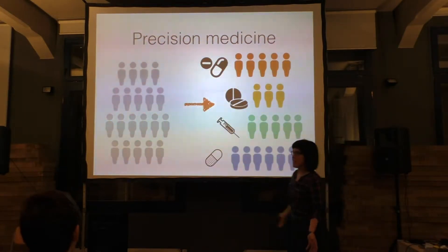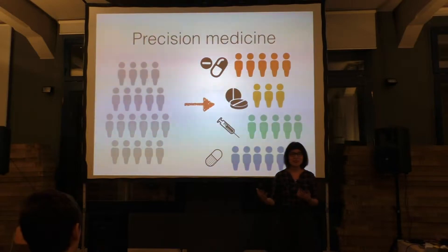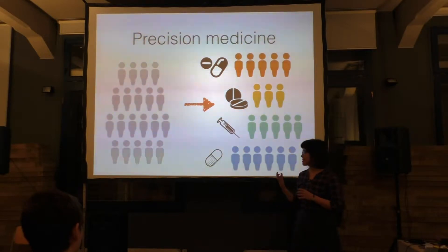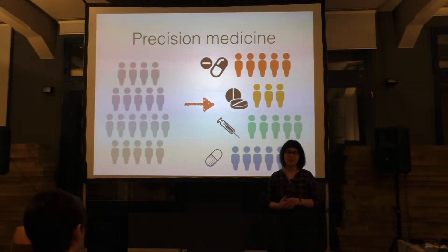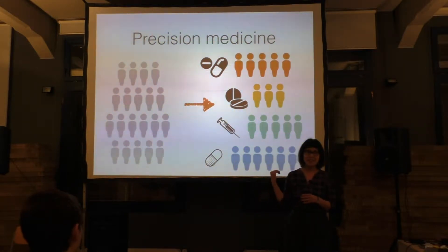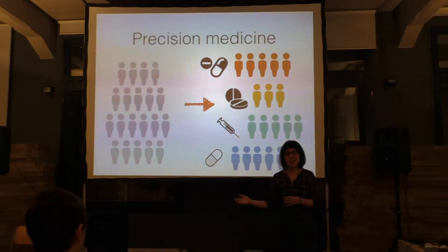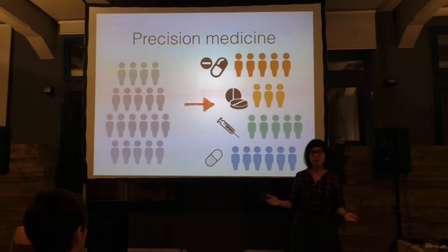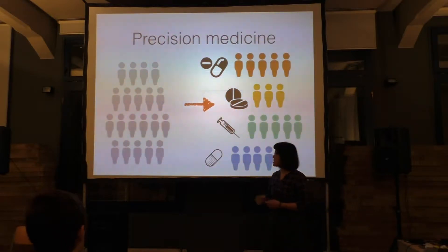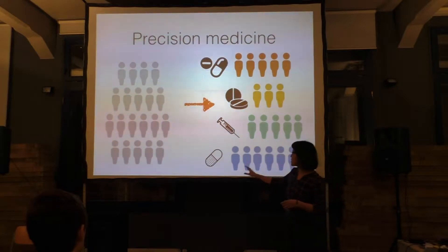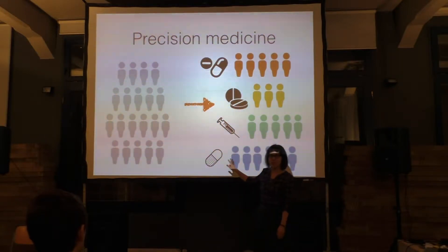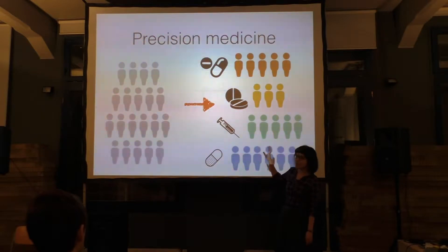But in reality, it doesn't work like that, because people are different, different medicines work for different people, and also not all diseases are the same. For example, with cancer there are many different types. I work with breast cancer data, and there are several different types of breast cancer — some can kill you very quickly and it's very difficult to treat, and some other types you can live happily for many years without much treatment at all.